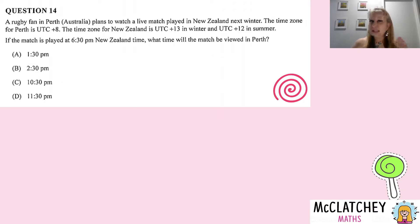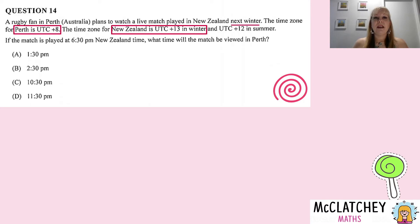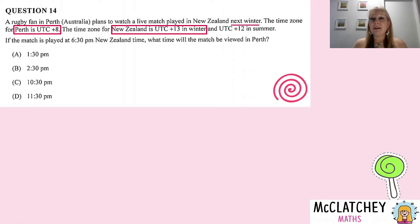We've got a few options that could be a little confusing. I always find it helpful to first look at the problem and highlight or underline the key information. We know that the match is in winter, which means we're not interested in the summer time — it's not relevant at all. The reason they put it in there is to indicate that there is daylight savings, however you don't need to know about that for this question.